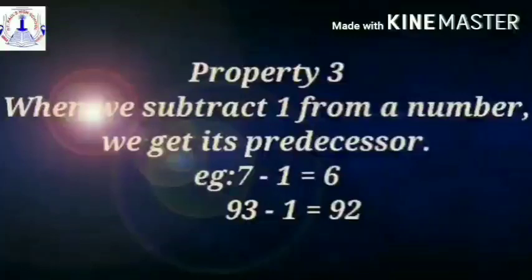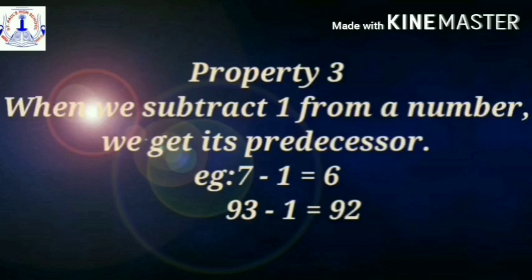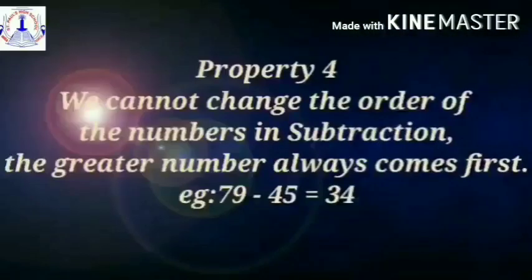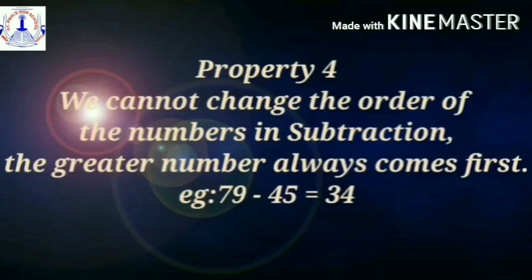Property 3: When we subtract 1 from a number, we get its predecessor. For example, if you subtract 1 from 7, you get the answer 6. And 93 minus 1 is equal to 92. Property 4: We cannot change the order of the numbers in subtraction. The greater number always comes first. For example, 79 minus 45 is equal to 34 — that is, you can minus a smaller number from a bigger number. Ok students, have you all understood the properties?